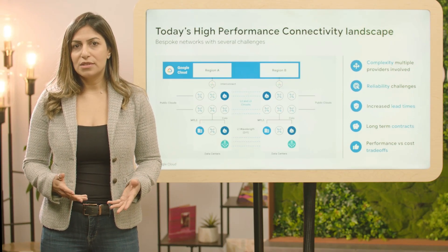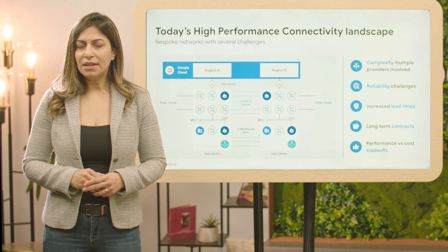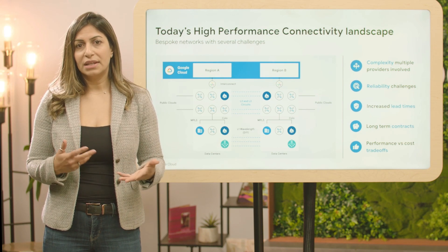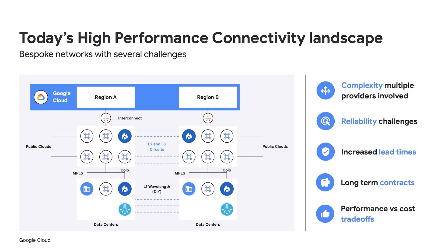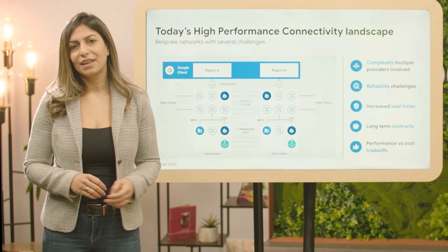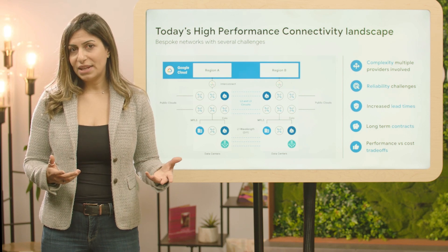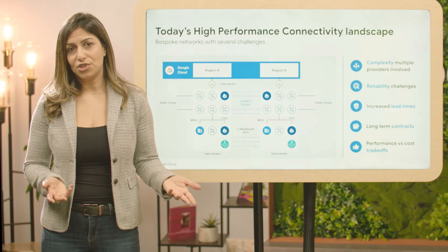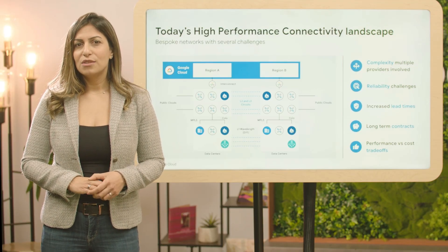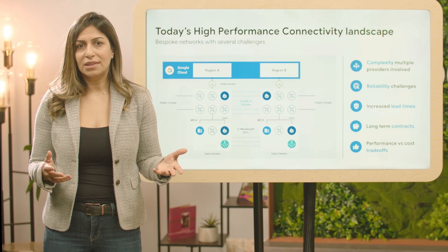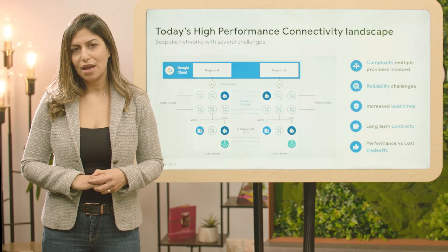If you're networking at a global enterprise or a large financial institution, your company has probably been investing in digital transformation and accelerating its cloud adoption. To accommodate this, you've likely adopted connectivity patterns that aggregate your distributed sites in co-location facilities and build on-ramps to your public cloud environments. Despite leveraging cloud-native constructs for some of your connectivity needs, you still need to maintain a considerable network footprint to interconnect your private data centers and co-location spaces globally.